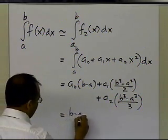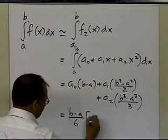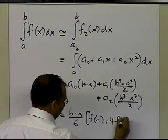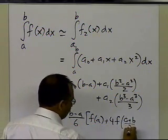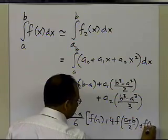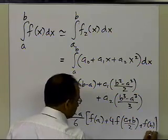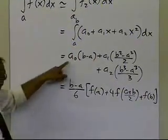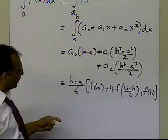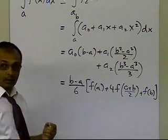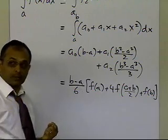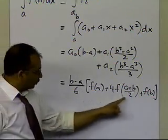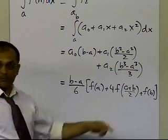After substituting the values of a₀, a₁, and a₂, the integral simplifies to (b−a)/6 times [f(a) + 4f((a+b)/2) + f(b)]. This is a remarkably compact result, expressed entirely in terms of the integration limits and the function values at the three points.